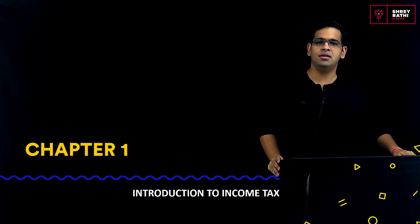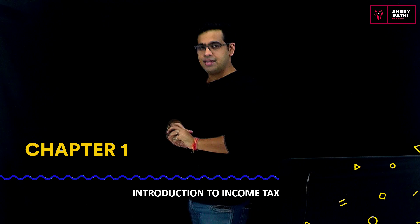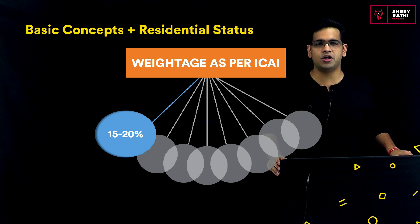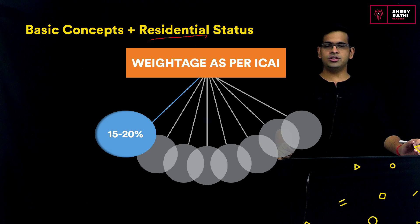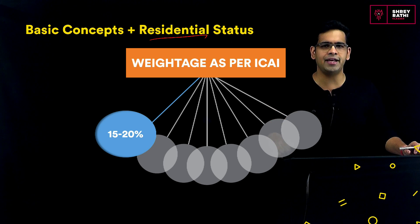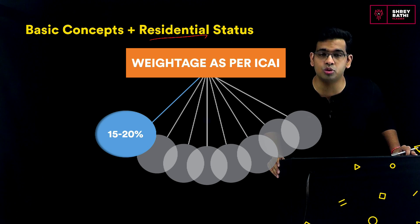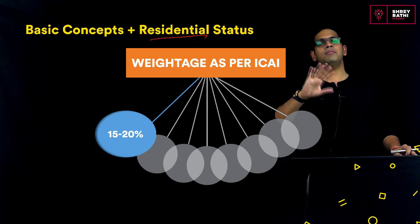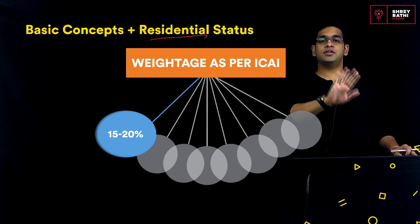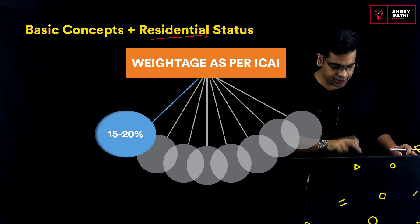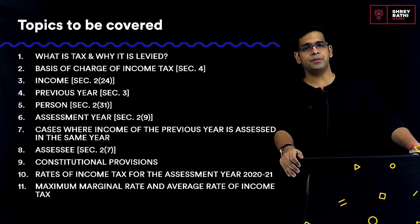We start with Income Tax (60 percent) first, followed by GST. Coming straight to Chapter 1: Introduction to Income Tax. T2 wants to know the weightage. Basic concepts — Chapter 1 (Introduction to Income Tax) and Chapter 2 (Residential Status) — consists of 15 to 20 percent of the income tax portion, which is around 9 to 12 marks. These two chapters are among the simplest, and with MCQs, you can score at will.